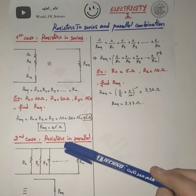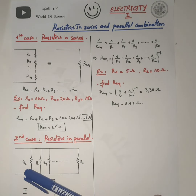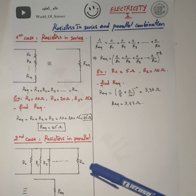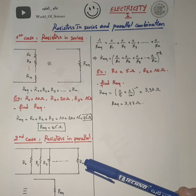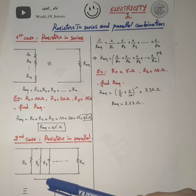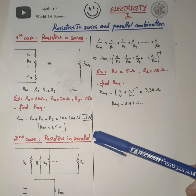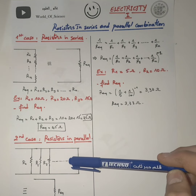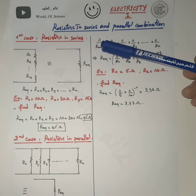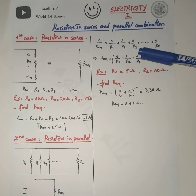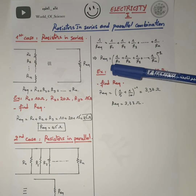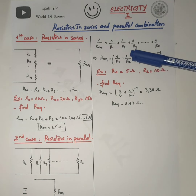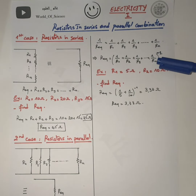Now we move to the second case: when we have resistors in parallel. We see that R1, R2 till Rn are in parallel to each other. Whenever you have 2, 3, 4 till N resistors in parallel, we should always follow this rule: 1 over R equivalent equals 1 over R1 plus 1 over R2 plus 1 over R3 till 1 over Rn. This means R equivalent equals the quantity (1 over R1 plus 1 over R2 plus 1 over Rn) raised to the power of negative one.